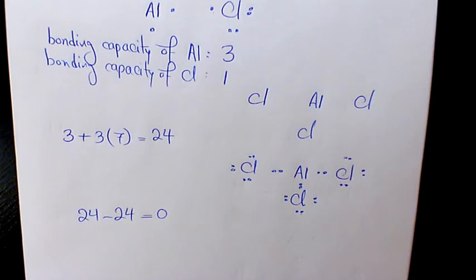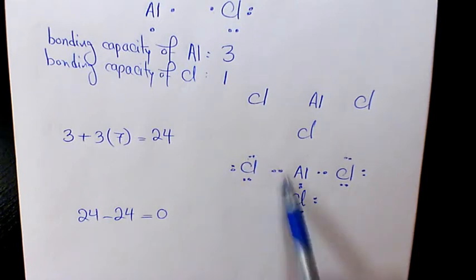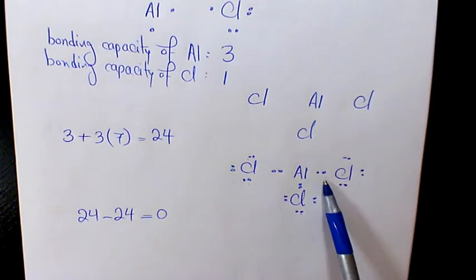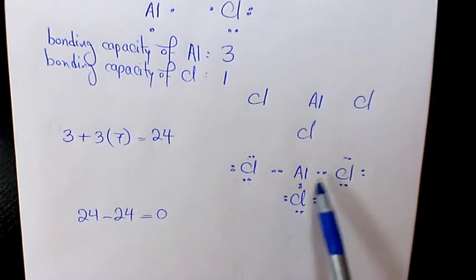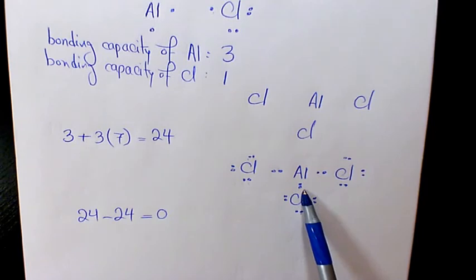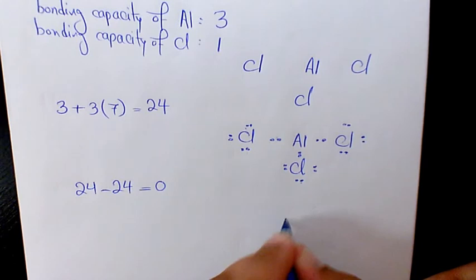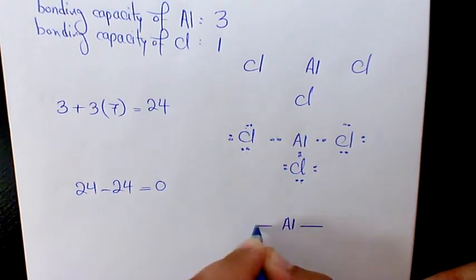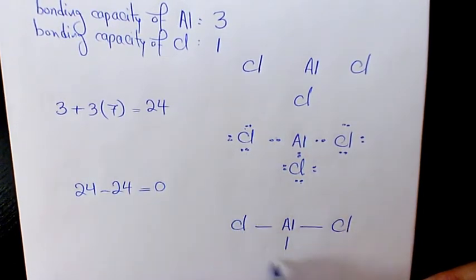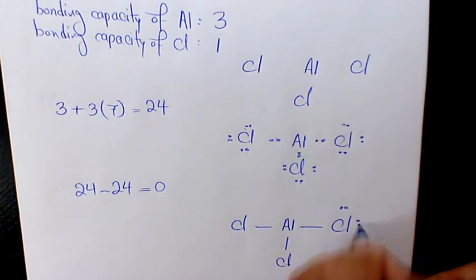Now, what we need to do, we need to see if everything follows the full octet. For Chlorine, we have eight electrons, so that's filled — same thing here, same thing here. However, if you look at the Aluminium, we have two, four, six — and it is underfilled. Aluminium is an exception to the octet rule, and we are okay with this structure. That's called the underfilled exception situation.